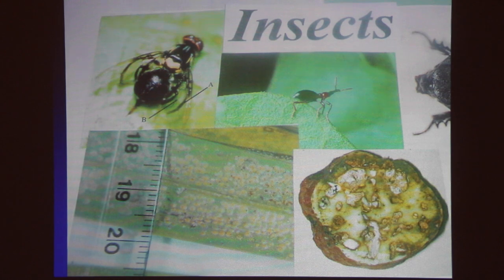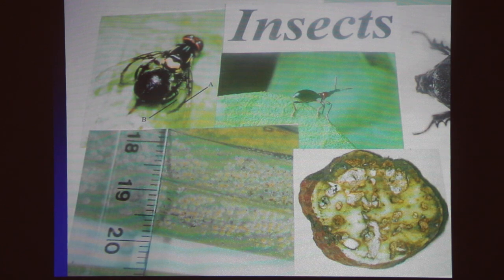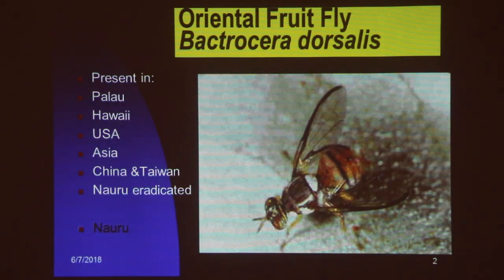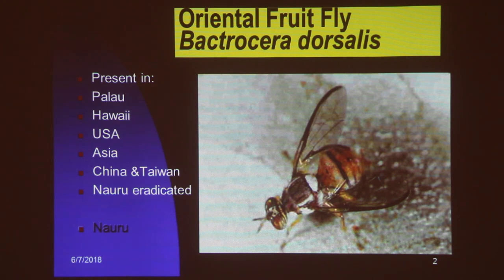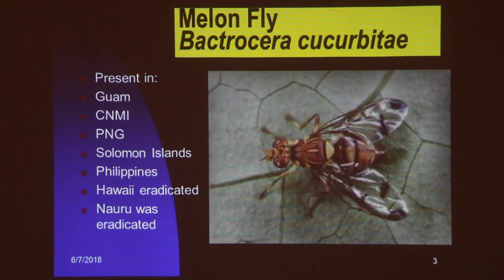Now we are talking about insects and pests which are not present in FSM. It is very important for you to know these, because if you find one of these new pests you should report it immediately so we may be able to eradicate it before it spreads. This is the oriental fruit fly — it is present in Palau, Hawaii, the US, Asia, China, and Nauru. The oriental fruit fly has many hosts, attacking many fruits and vegetables, laying eggs inside so worms develop and the produce cannot be eaten.